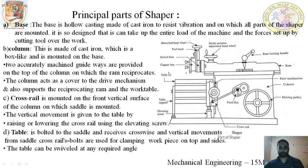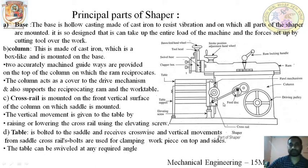You can see here the ram, tool post, tool head, table, table adjusting screw, cross rail, feed disk, and column rail. These are some important parts of the shaper.